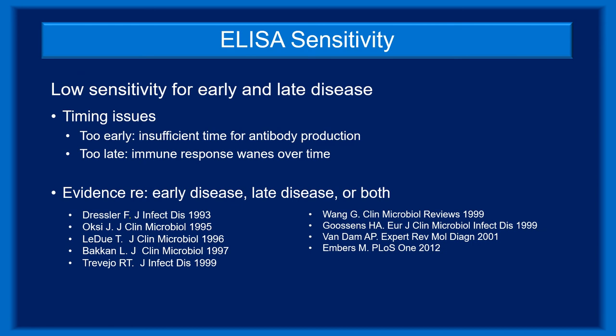There is also concern about the sensitivity of ELISA testing. Low sensitivity for both early and late disease has been well documented. Some of this is attributable to timing — tests done too early in the infection, before the immune system has time to develop antibodies, will naturally produce false negative results. But testing can also occur too late. Individual case reports suggest that the immune response to Borrelia burgdorferi wanes over time, such that infected patients, even those never treated, may have negative results. This was well documented in non-human primates infected with Borrelia burgdorferi — untreated animals were originally C6 ELISA positive but over two years became C6 negative, even though bacteria were readily apparent at necropsy.